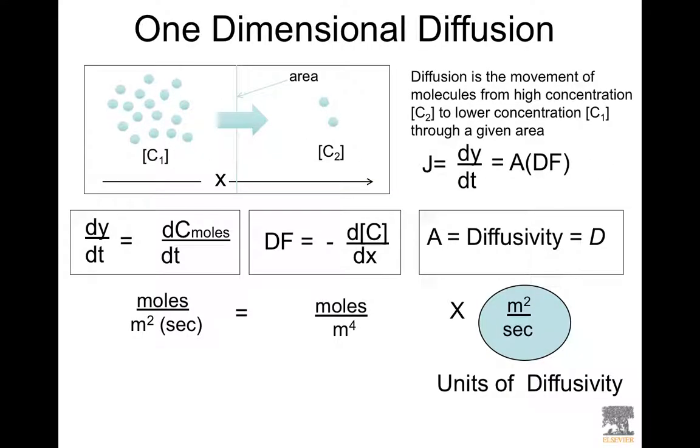So in the case of one-dimensional diffusion, diffusion is the movement of molecules from an area of high concentration to an area of low concentration. So from C1 to C2 along a direction X through an area.